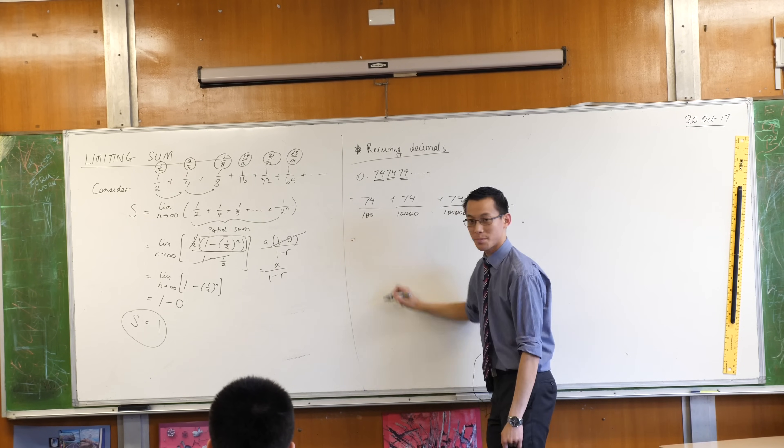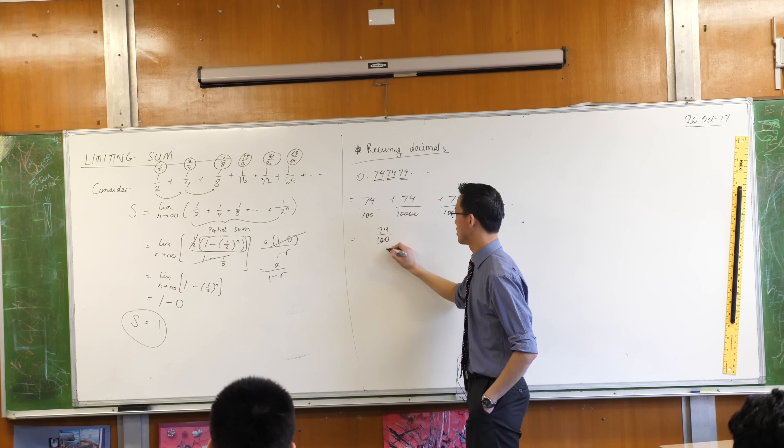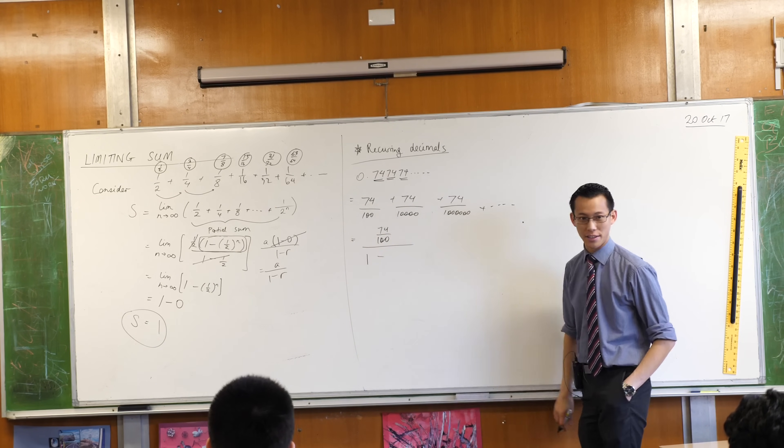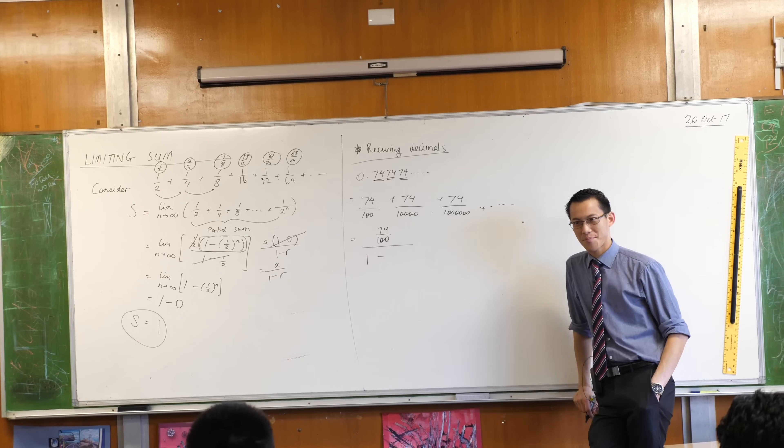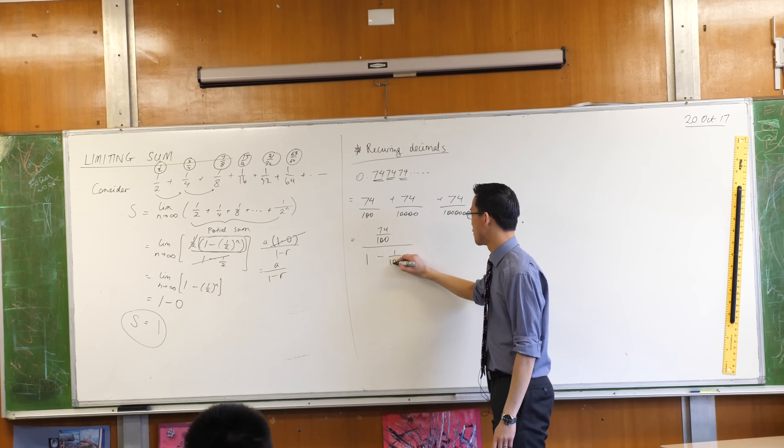Tell me what a is. 74 over 100. There it is. Divided by 1 minus. Okay, look carefully. What's the common ratio? It's 1 over 100. Every time it's getting 100 times smaller. 1 over 100.